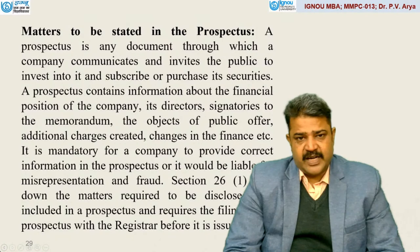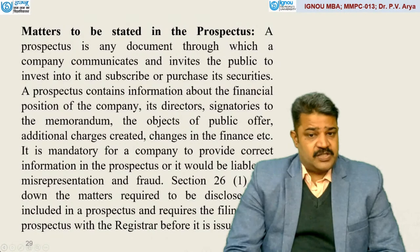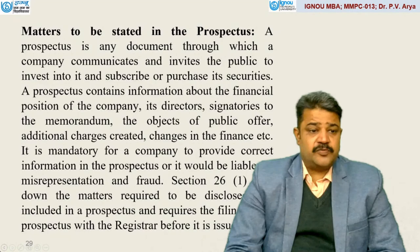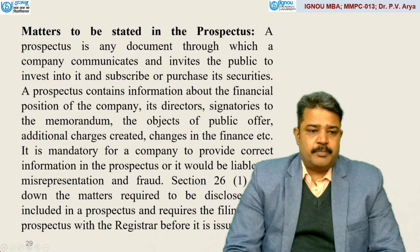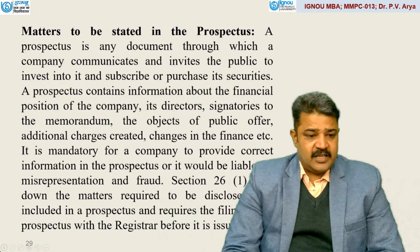There are certain matters that are mandatory to be specified in the prospectus. It is any document through which a company communicates and invites the public to invest into it and to subscribe or purchase its securities. A prospectus contains information about the financial position of the company, its directors, signatories, the memorandum, the objects of the public offer, additional charges created, changes in the finance, etc. It is mandatory for a company to provide correct information in the prospectus, or it would be liable for misrepresentation and fraud. Section 26, Subsection 1 lays down the matters required to be disclosed and included in a prospectus, and requires the filing of prospectus with the registrar before it is issued.